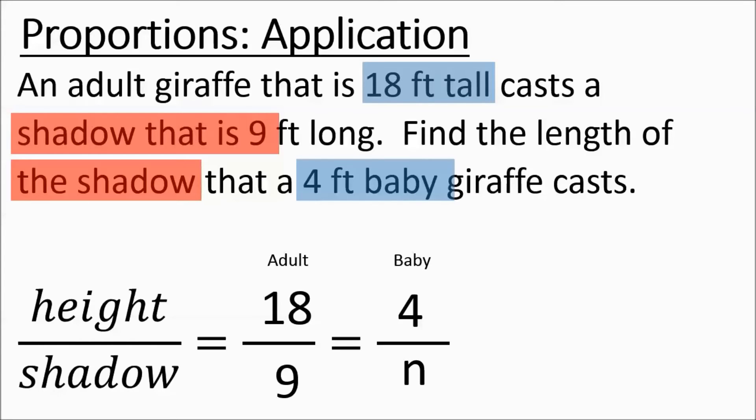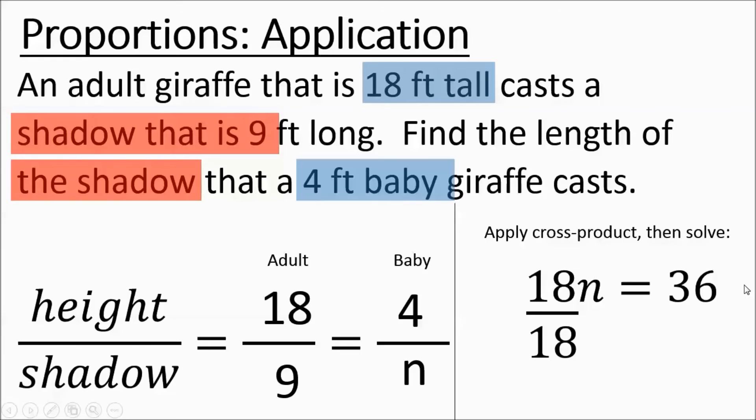So we can set up our cross products. 18n equals 36. 18 times n, 9 times 4 gives you the 36. Divide out the 18 and you get n equaling 2. Now some kids might have said, oh, well 9's half of 18, 2's half of 4. You could have done it that way as well. I'm just showing you this one way that works every time. They're not always going to be nice and obvious like this.